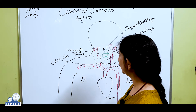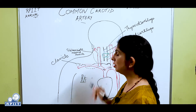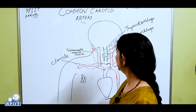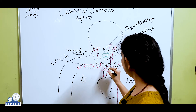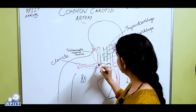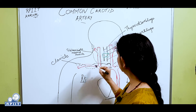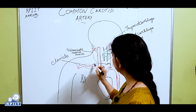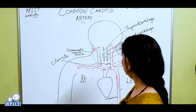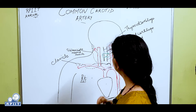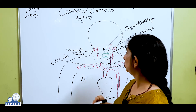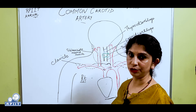The brachiocephalic trunk gives two branches. One goes to the brachial region and is known as the subclavian artery, because it lies below the clavicle. Here the sternum is present and the clavicle is on both sides — I have drawn the clavicle with dotted black lines.